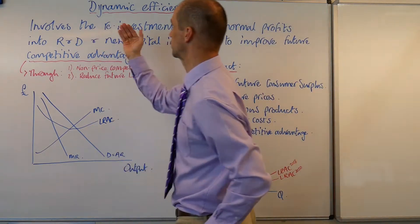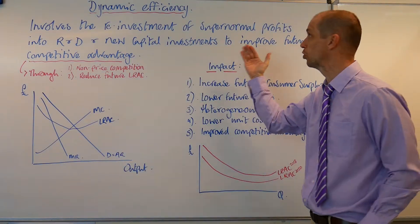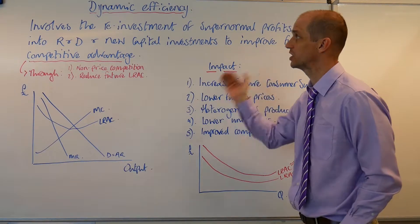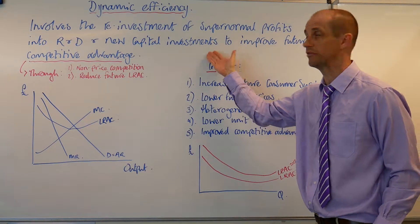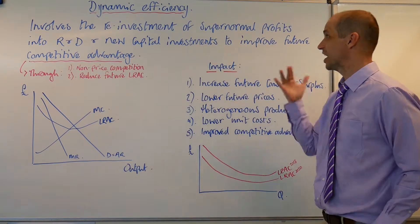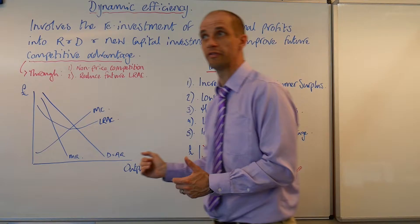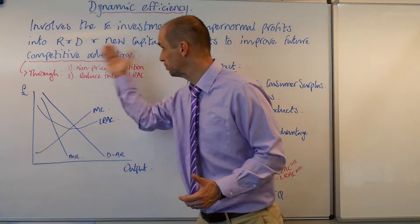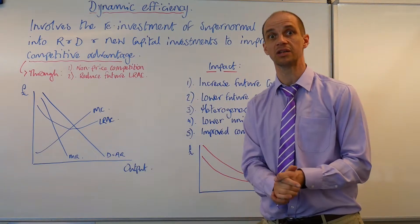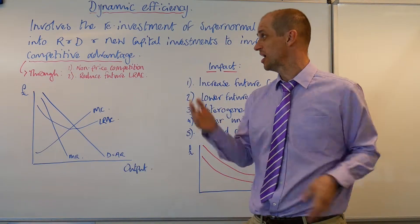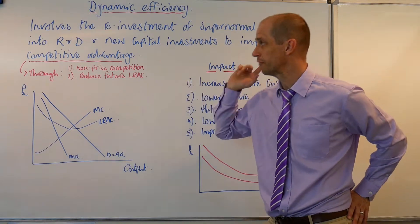This involves the reinvestment of supernormal profits into research and development and new capital investments, and this will help to improve a business's future competitive advantage. It's likely to do this in two main ways.